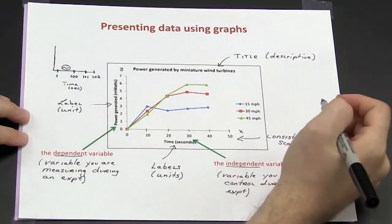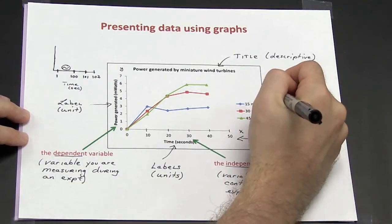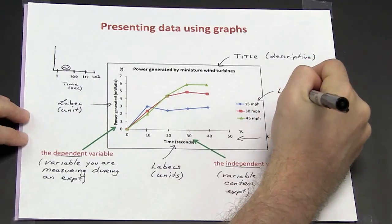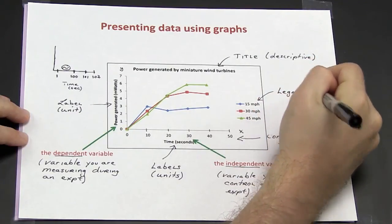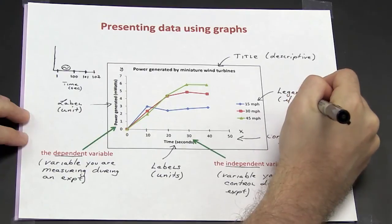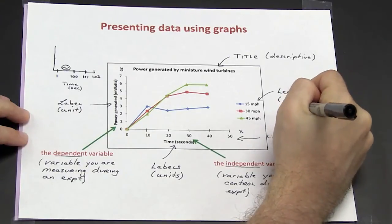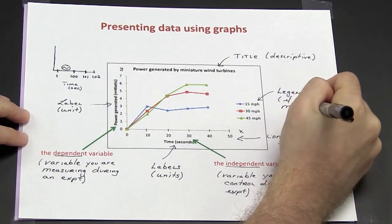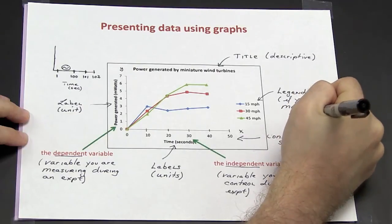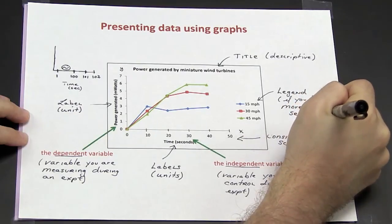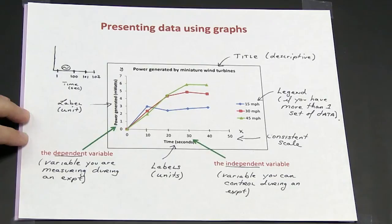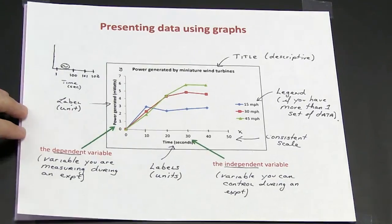The last thing that you should have on a graph is a legend. The legend is used if you have more than one set of data on a graph.